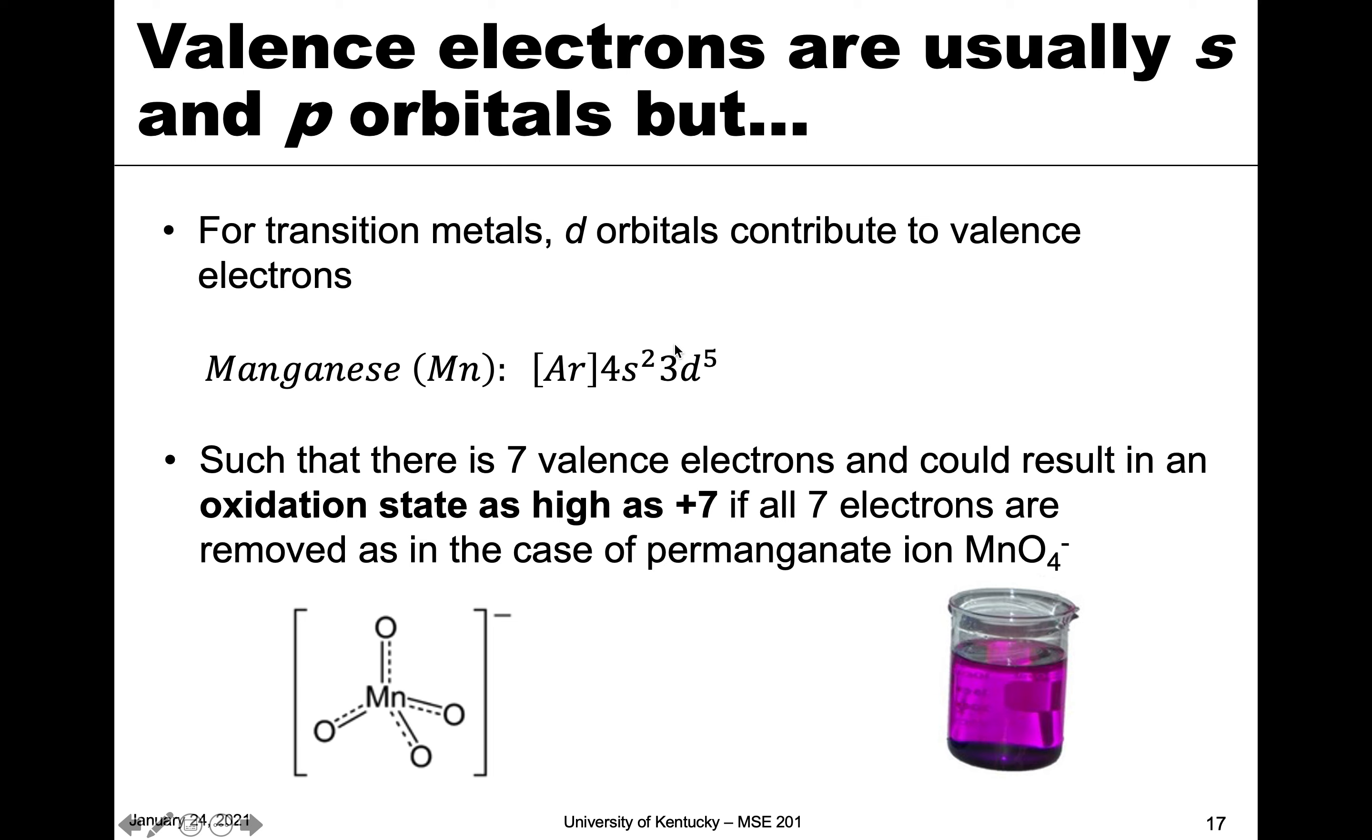That means we have seven valence electrons from both n equals 3 and n equals 4. When we talk about bonding, that means we could potentially have the removal of seven electrons. That results in something called permanganate, which is MnO4 minus. Since we have seven valence electrons, these are what are active in bonding.